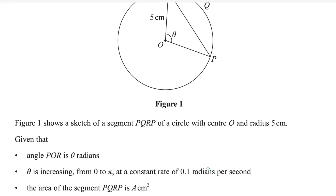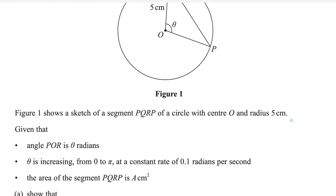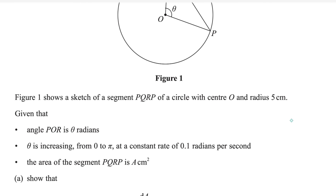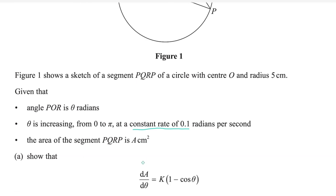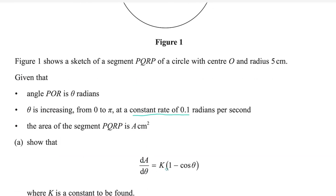Figure 1 shows a sketch of segment PQRP of a circle with center O and radius 5 centimeters. Given that angle POR is theta radians, theta is increasing from 0 to 5 at a constant rate of 0.1 radians per second. The area of segment PQRP is A square centimeters. Show that dA/dθ equals k(1 − cosθ), where k is a constant to be found.